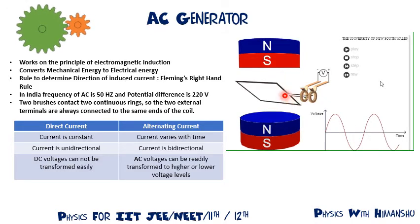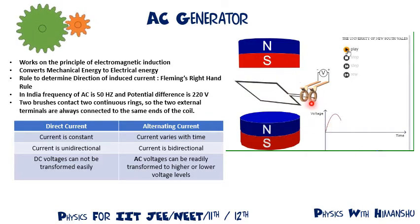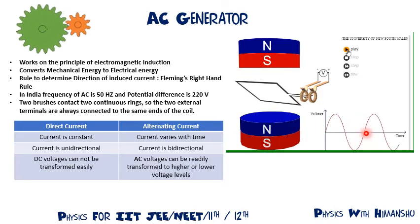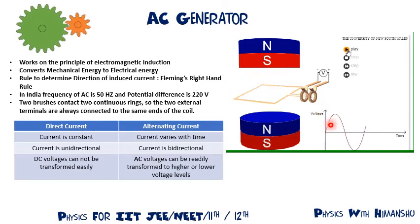When this coil rotates, there will be an induced EMF and induced current in the coil. This is how an AC generator produces AC voltage. Now let's come to the equations part.